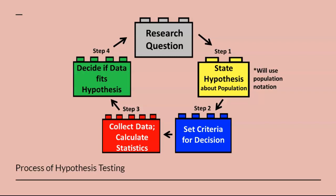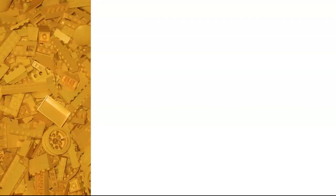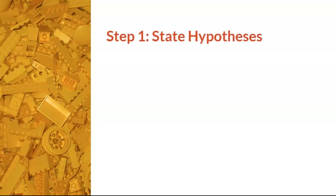For a quick review, this diagram illustrates the process of hypothesis testing. We will use the same four steps in conducting a one-tailed hypothesis test, with some modifications along the way. Step one, the yellow Lego, is to state hypotheses. Since we are using directional hypotheses instead of non-directional, we will have our first modifications in this step.